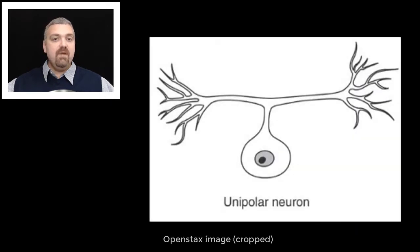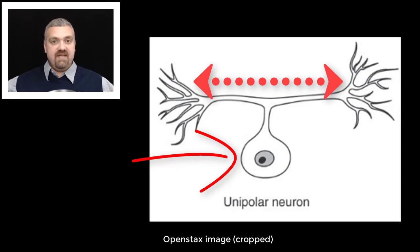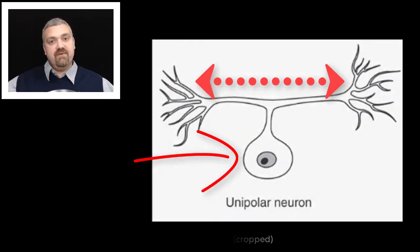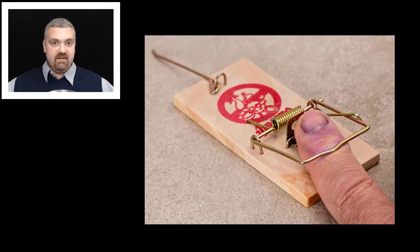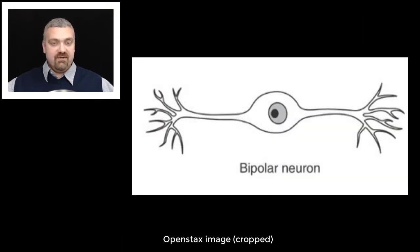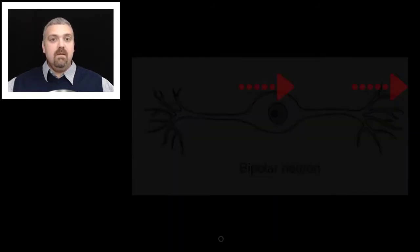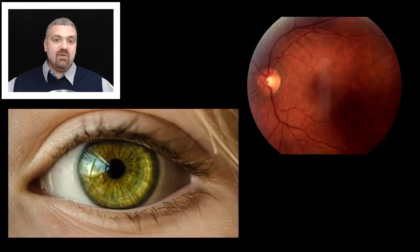A unipolar neuron only has one extension — the cell body is off to the side and you just have that one extension running both directions. Unipolar neurons would be your sensory neurons. Bipolar neurons have two extensions, one traveling each direction. The most common place to find bipolar neurons is in your special sense organs, like in your eye.